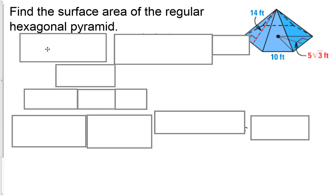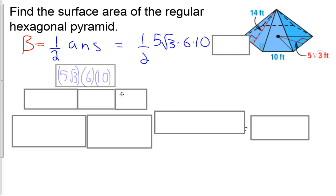Starting off, base plus half PL. We're going to find area of the base first, which is half ANS. The apothem is 5 root 3, sides is 10, number of sides looks to be a hexagon, I count 6. So plugging that in, 5 root 3, 6, 10. Half of 5 root 3 times 6 times 10 gives us 150 square root of 3. We'll calculate when we're done at the end.